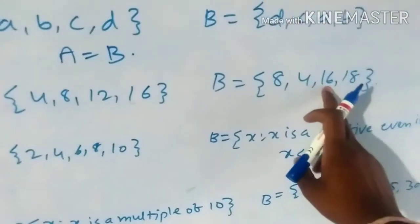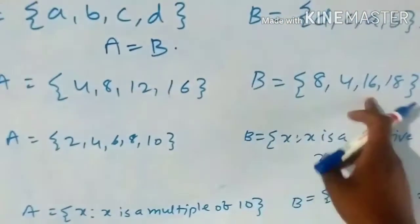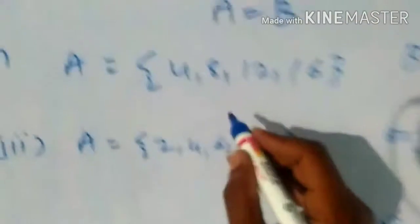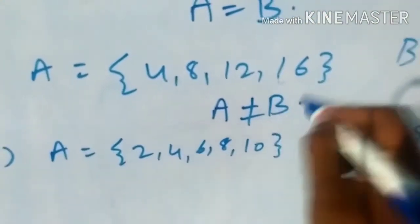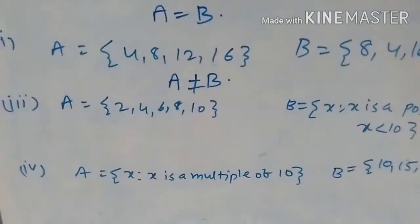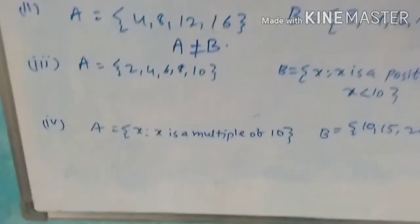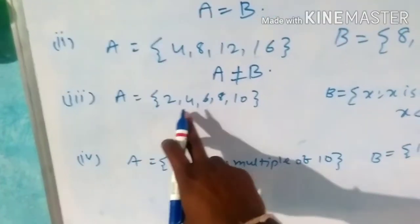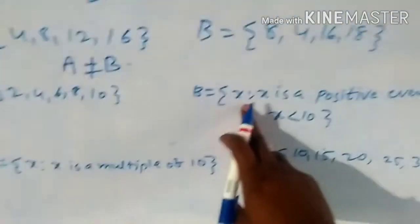16 is present, but 12 is not there in B. So in this case A is not equal to B.